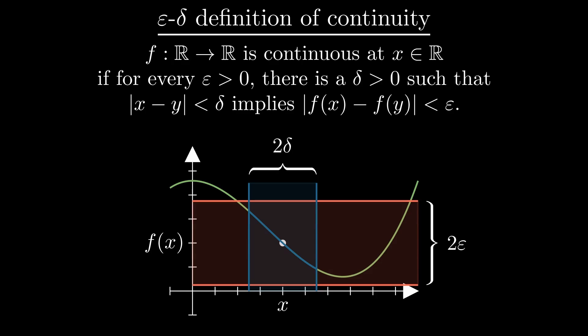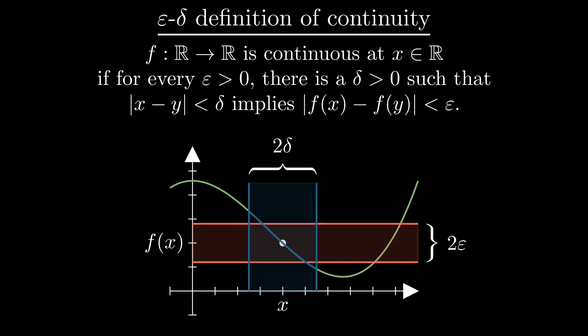Visually, the blue part of the graph stays inside the red area. For a smaller epsilon, we may have to choose a smaller delta.